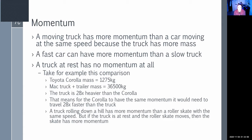A Toyota Corolla has a mass of about 1,275 kilograms. A Mack truck with trailer is about 36,500 kilograms — the truck is 28 times heavier. For the Corolla to have the same momentum as the truck, it would have to be going 28 times faster. If they're both going 100 miles per hour, the Corolla would need to go 2,800 miles per hour to match the truck's momentum.